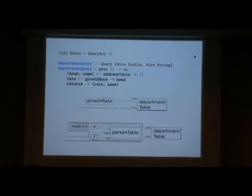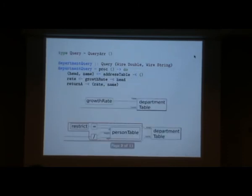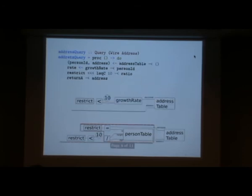Then we can reuse this in the queries we have to start with. We just replace the parts of those queries which did that operation with the growth rate abstraction. This one was called growth rate, and now we're just using it in the old department query. And again, we reuse the growth rate abstraction in our address query.